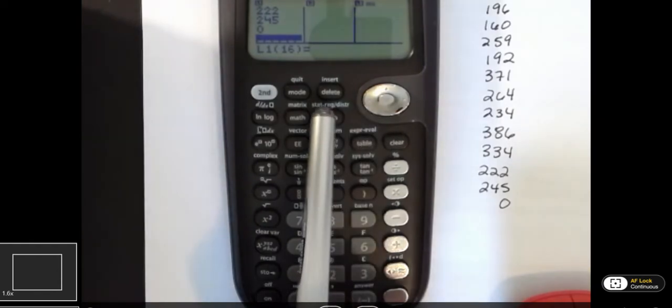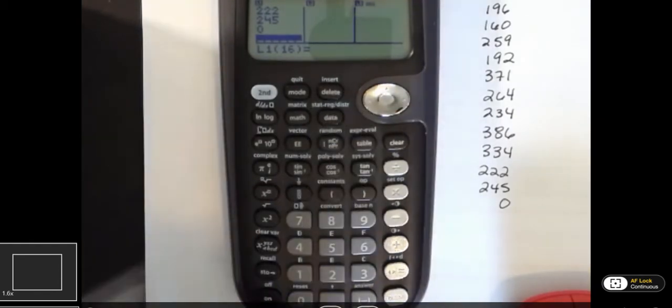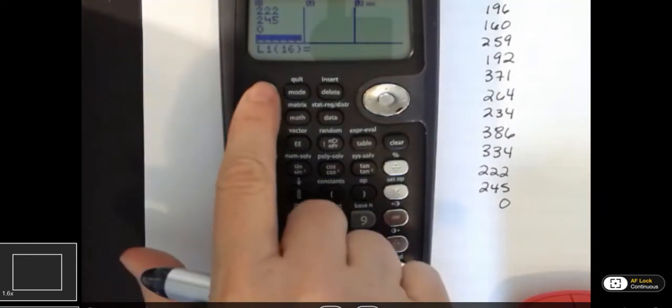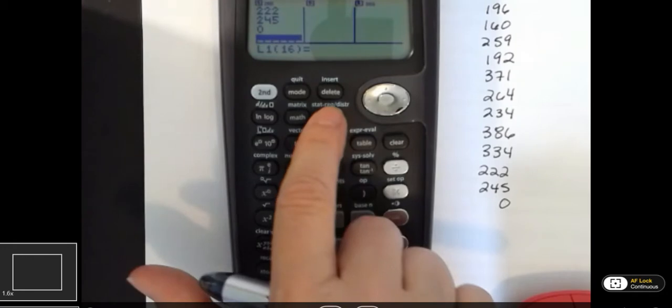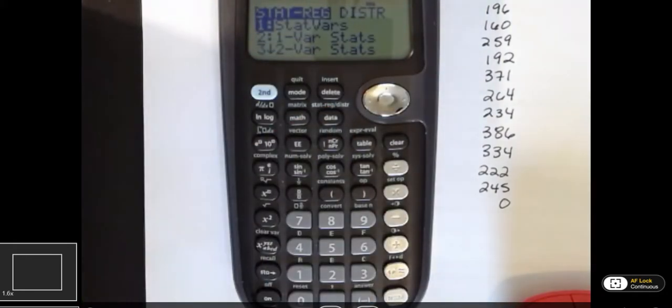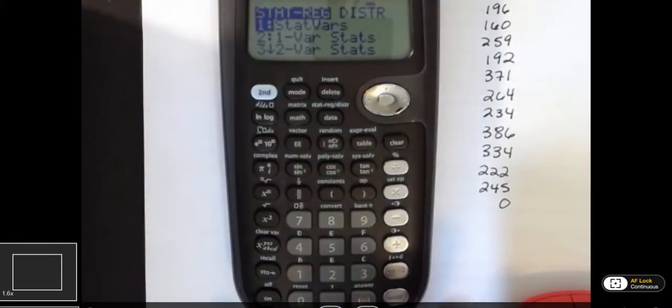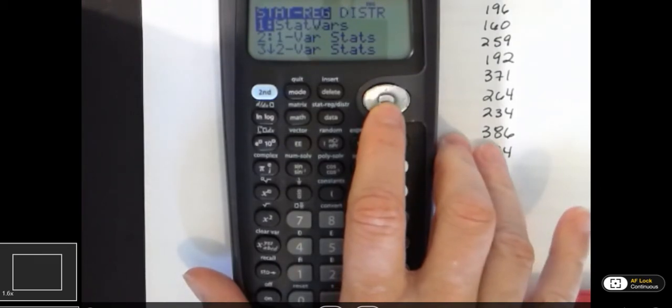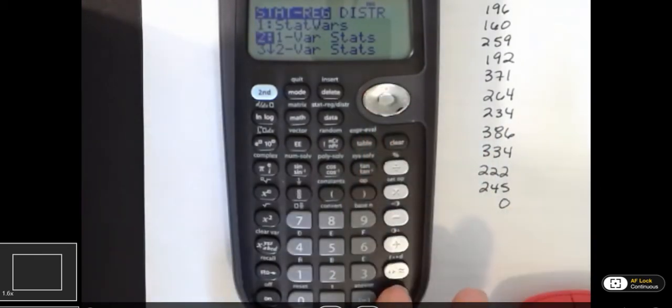So we're going to hit the stat button that says stat above data. Since it's above that button, we're going to hit the second function. So we're going to hit second function and data. And now we have some choices and I want it to do one variable stats calculation. So I'm going to use the down arrow to go down to number two and then hit enter.